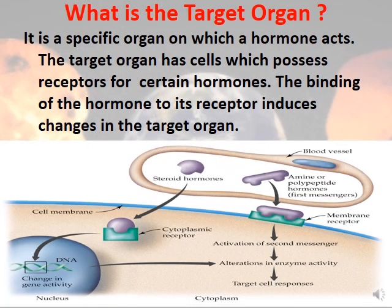What is the target organ? A target organ is a specific organ where hormones act. The target organ has cells with specific receptors for hormones. The binding of the hormone to its receptor will induce a change in the target organ. Hormones are found inside secretory vesicles and are secreted, then move toward their binding sites on the target organs to induce specific responses.